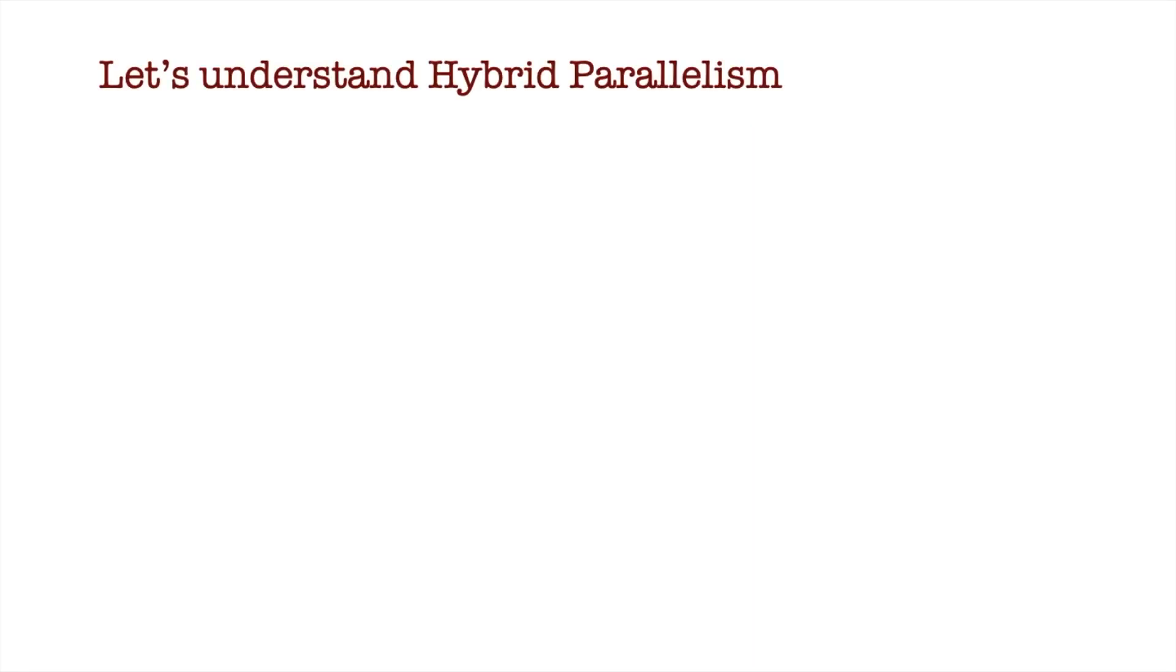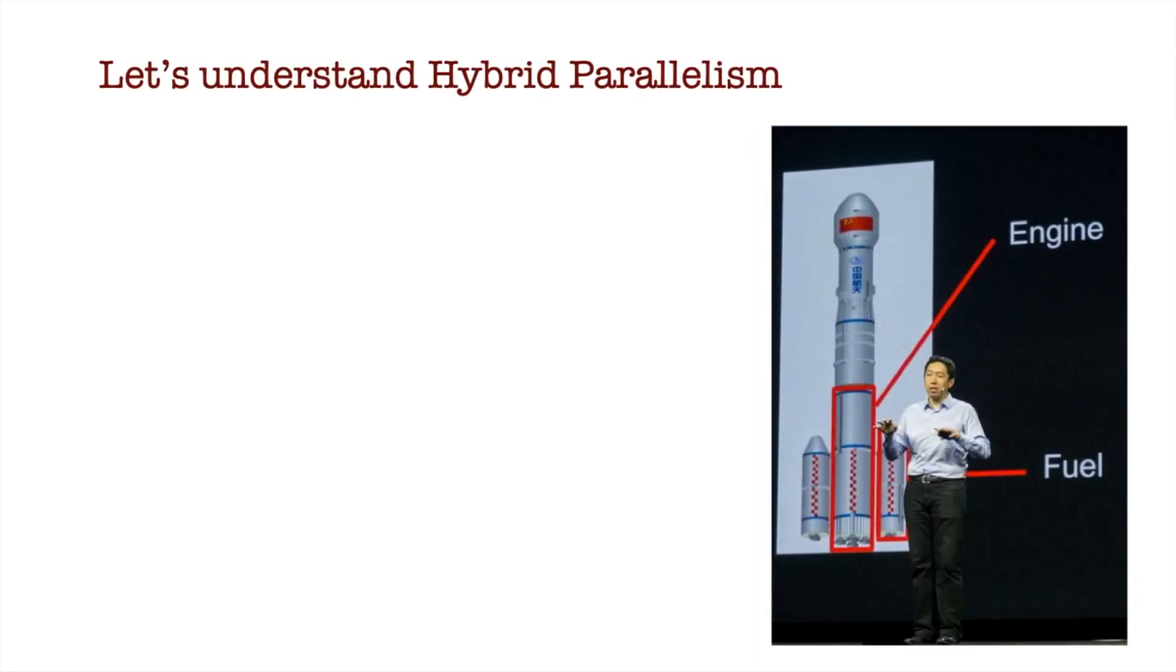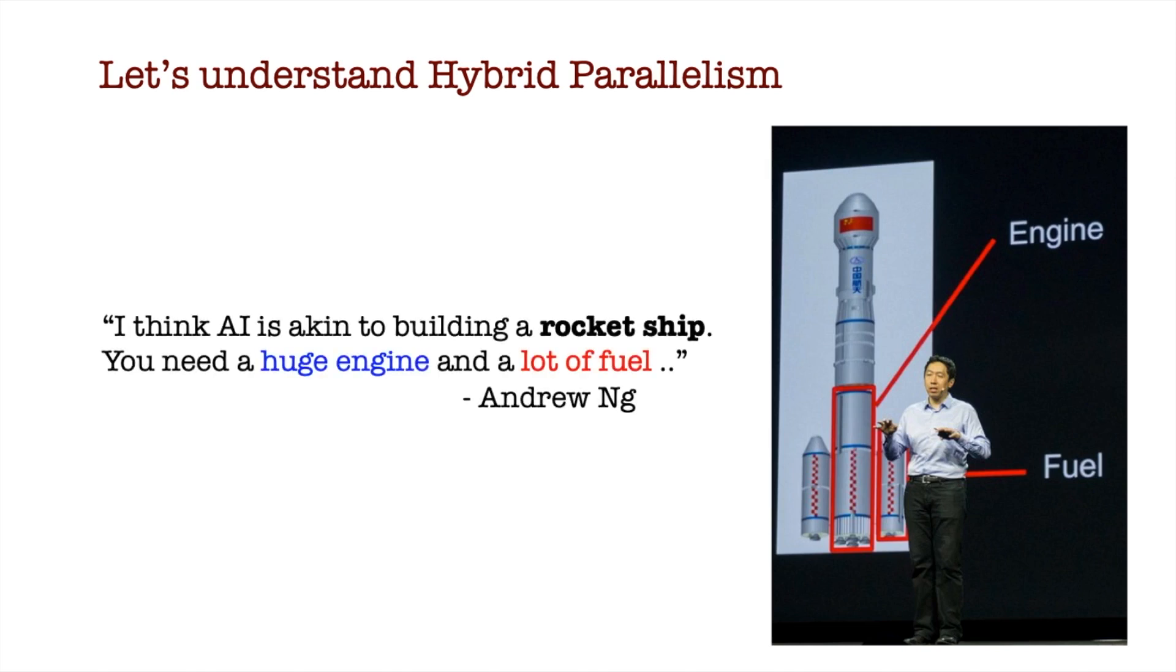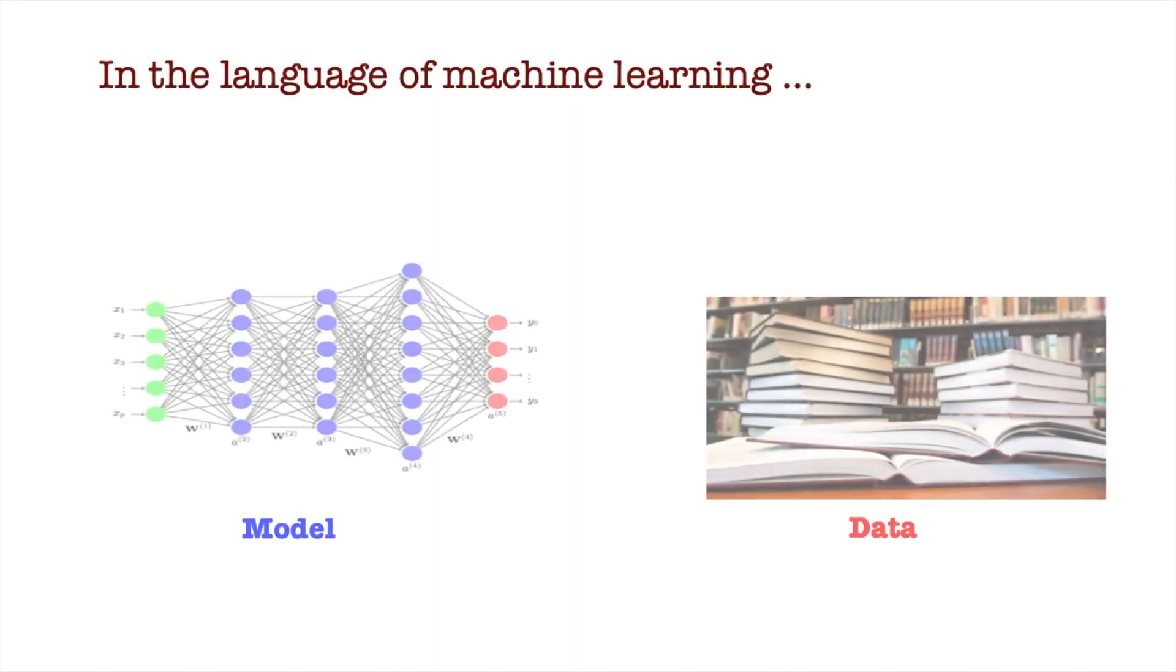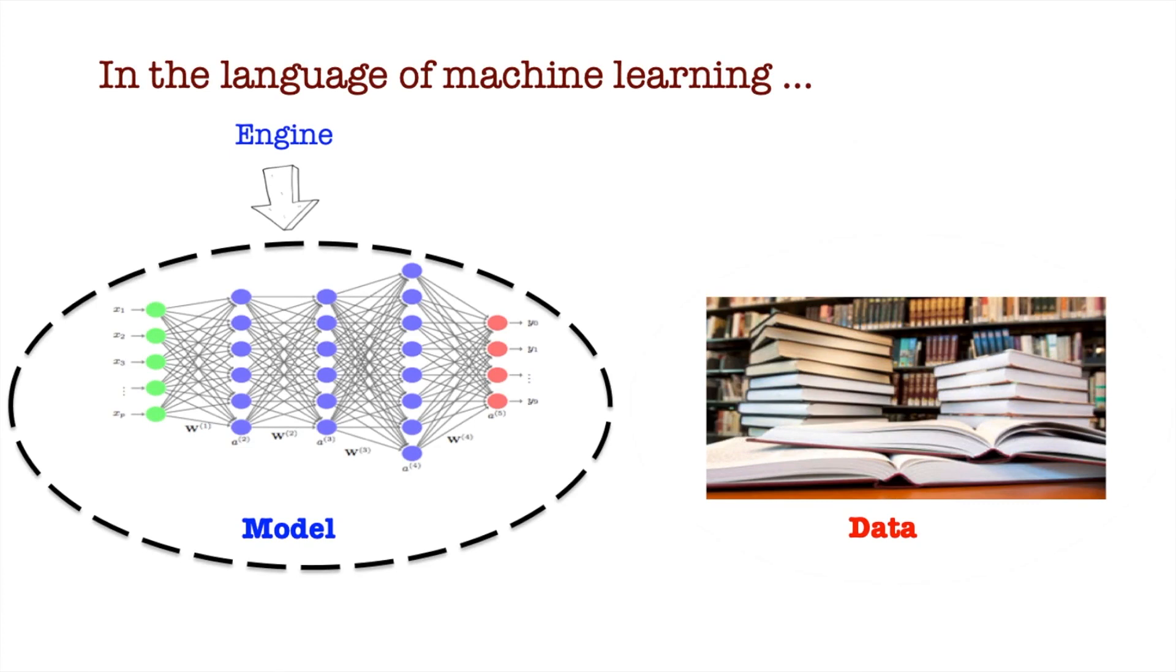So what is hybrid parallelism? Building a machine learning model is like building a rocket ship. We need a powerful engine and lots of fuel. The model, for example, a deep neural network is the engine and the data is the fuel.